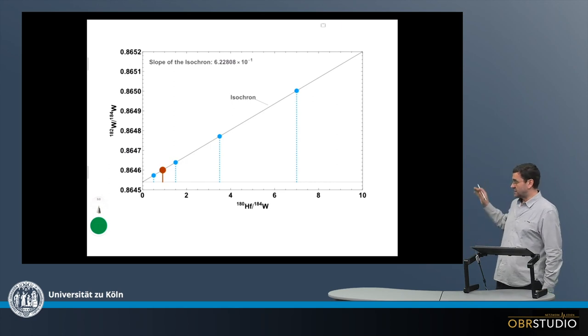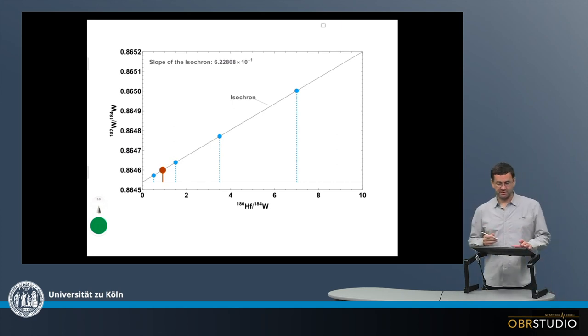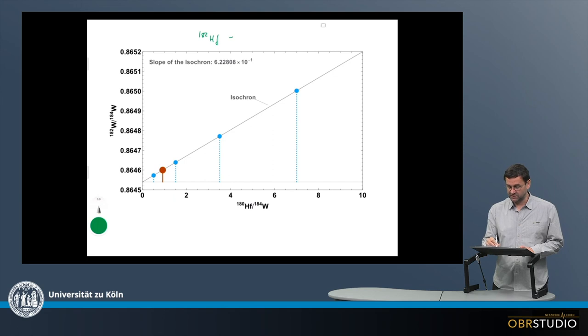Now, how are these isochron plots of short-lived decay systems structured? First, I need to repeat what decay system this is. This is the 182 Hafnium decaying to 182 Tungsten system.